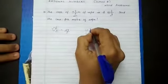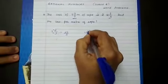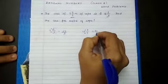And what is 12¾? 12 fours are 48, 48 plus 3 is 51 by 4.